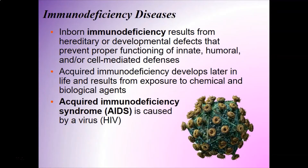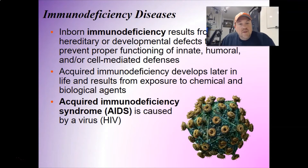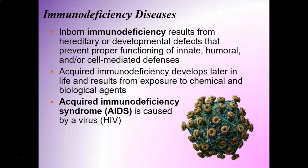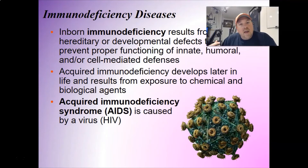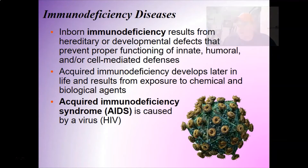There are other things that can happen with your immune system, such as immunodeficiency diseases. Inborn immunodeficiency diseases result from hereditary or developmental defects that prevent proper functioning of innate, humoral, and/or cell-mediated defenses. If you're born with a condition that interferes with the correct functioning of your immune system, you're in big trouble and have to be very careful. Acquired immunodeficiency develops later in life and results from exposure to chemical and biological agents - you're not born with it, but it can happen. One way that can happen is AIDS - acquired immunodeficiency syndrome - caused by the virus HIV. Thankfully we're making huge strides in combating that virus, but education is super important when dealing with HIV.